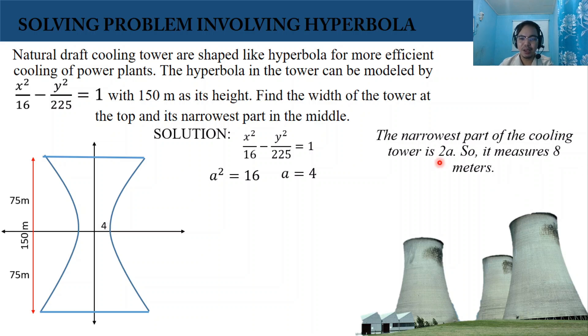Substitute the value of a, so we will have 8. The narrowest part in the middle of our hyperbola measures 8 meters. Then let's find the value of b. We have b squared equals 225 and b is 15.